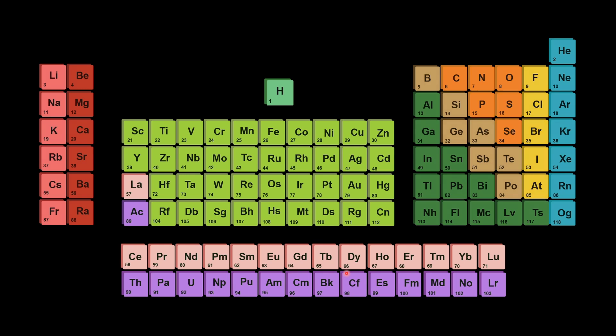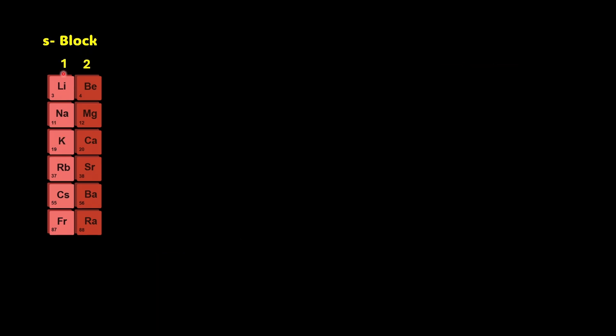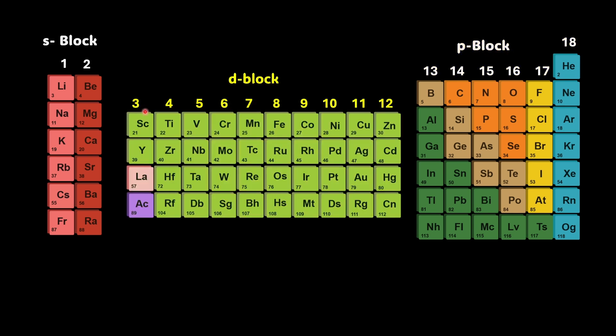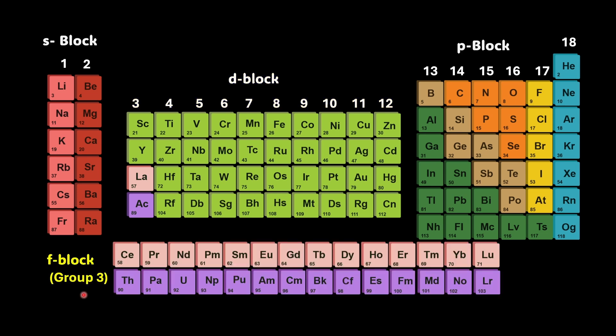Based on certain groups clubbed together we have group 1 and 2 making S block. What you see on right from group 13 to group 18 is P block. What you see in the center from group 3 to group 12 is D block and a part of group 3 is set aside and this is what we call F block.